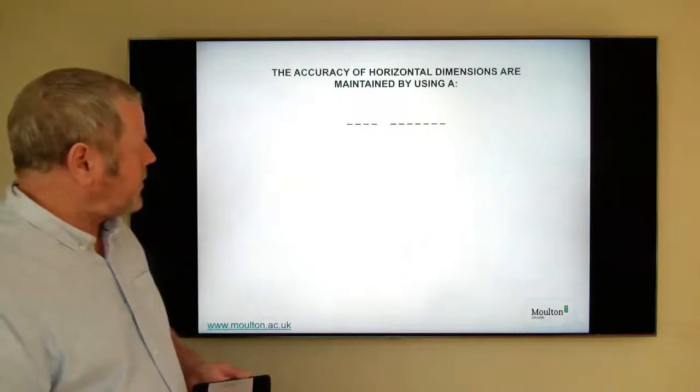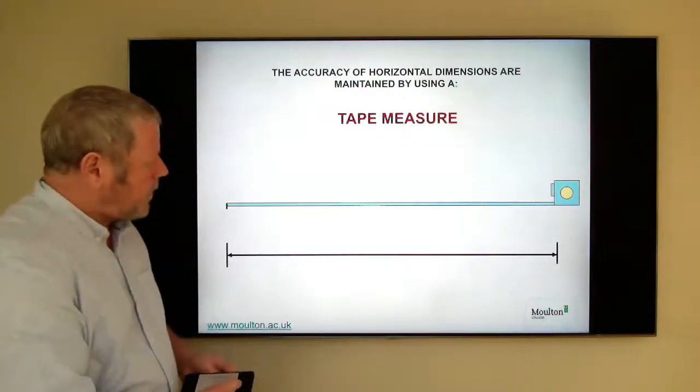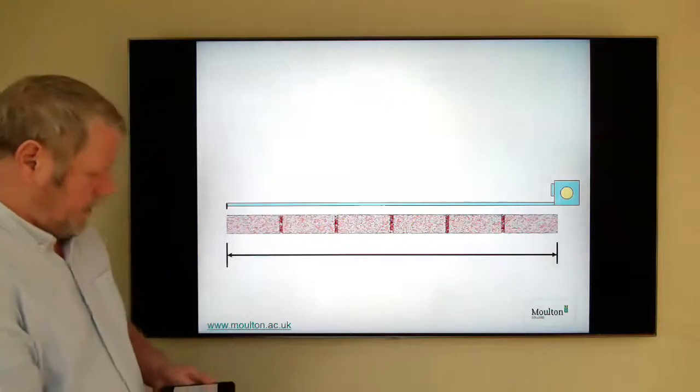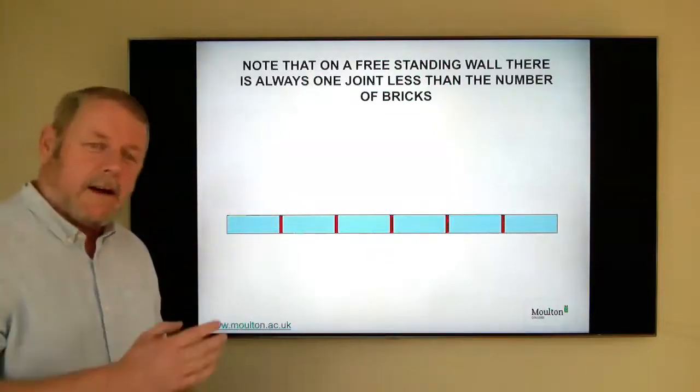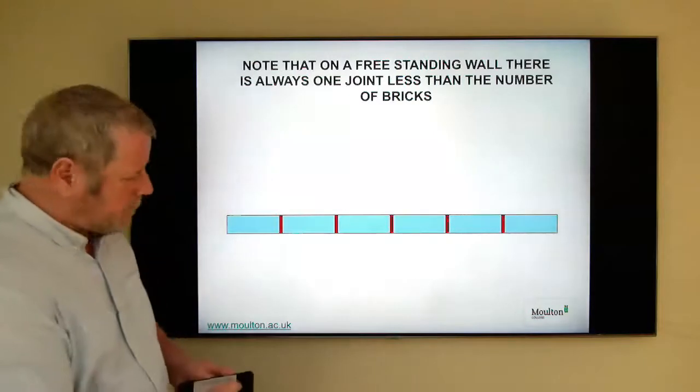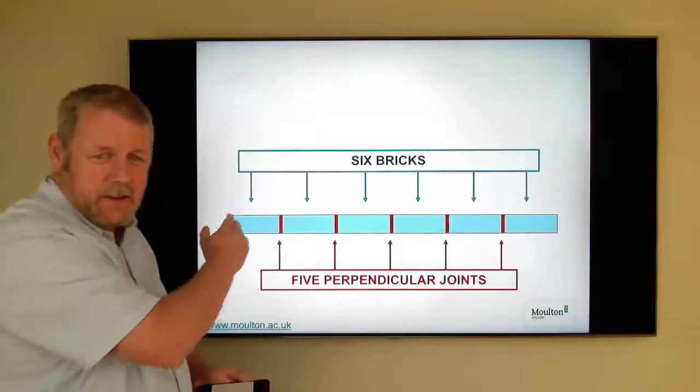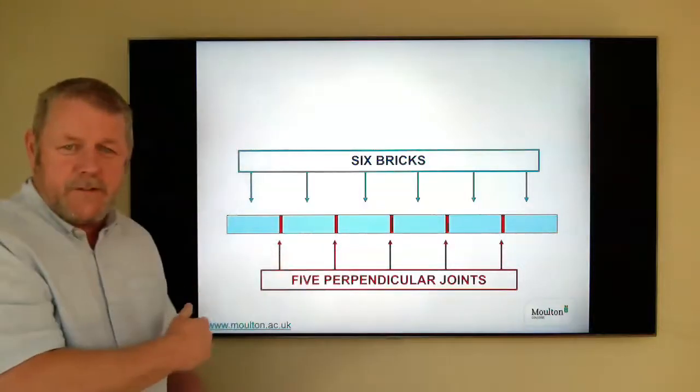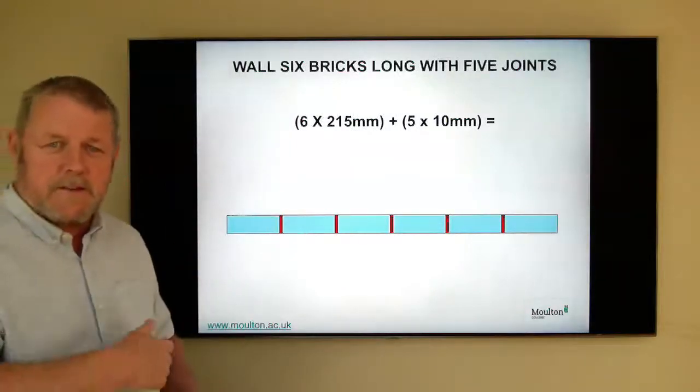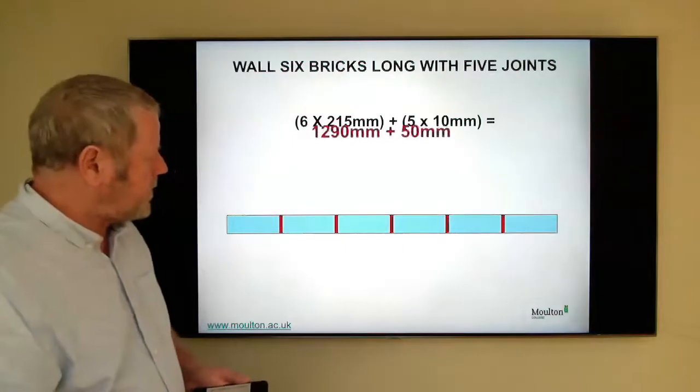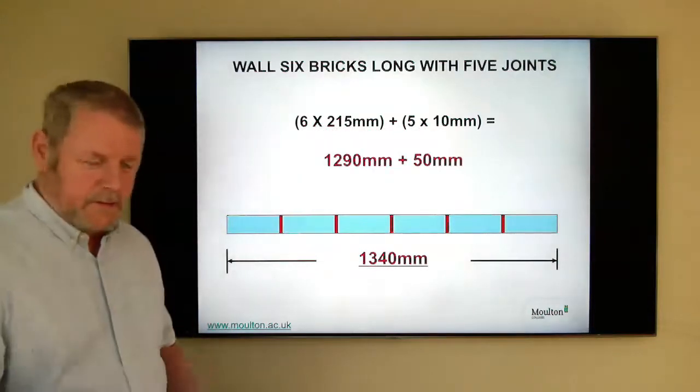We're then looking at maintaining horizontal dimensions. And again, clearly what we're going to be using there is a tape measure to mark out the lengths of walls. And as you can see there, one, two, three, four, five, six bricks. But that's not six times the nominal size of 225 millimeters. As you can see on there, what we have is in a freestanding wall such as that, where there are six bricks, there are only five joints. So we would be working that length out, six times 215 millimeters, the five times 10 millimeters would give us a wall length of one meter 340 millimeters or 1340 millimeters.